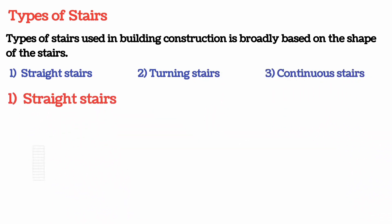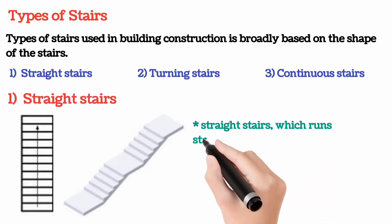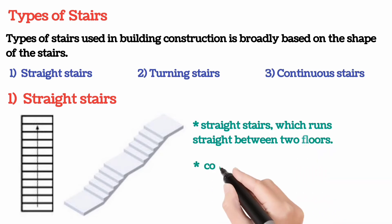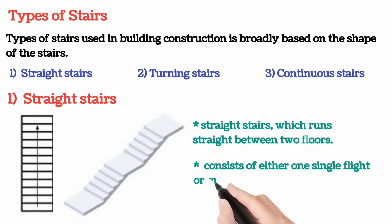Straight stairs, which run straight between two floors, consist of either one single flight or more than one flight with a landing.